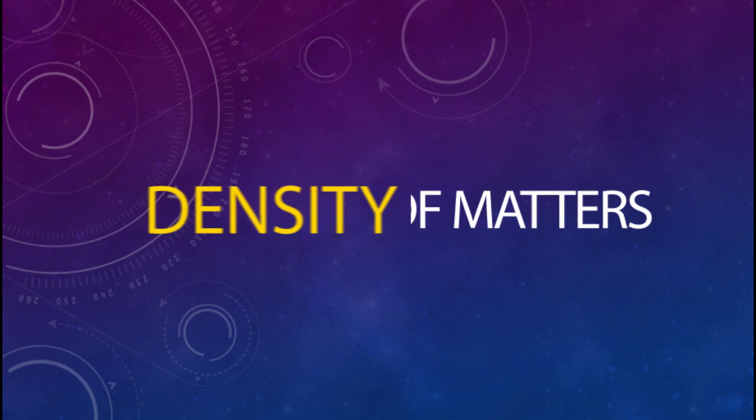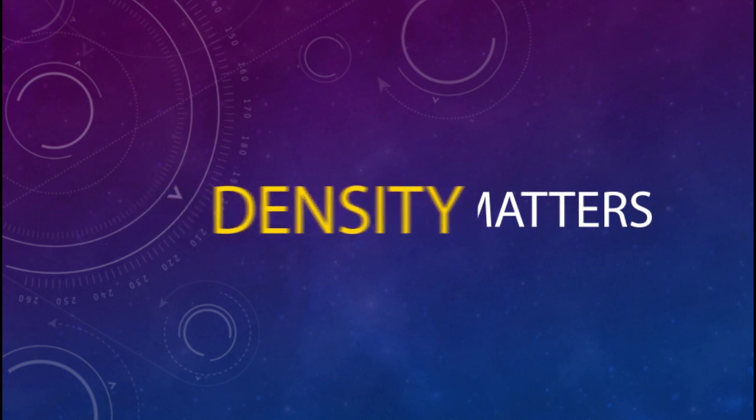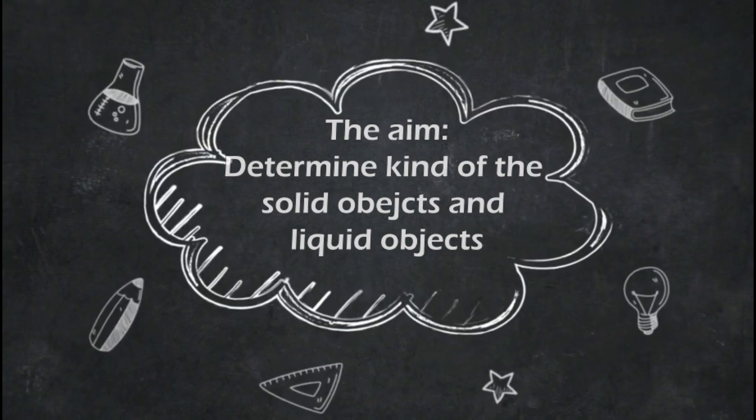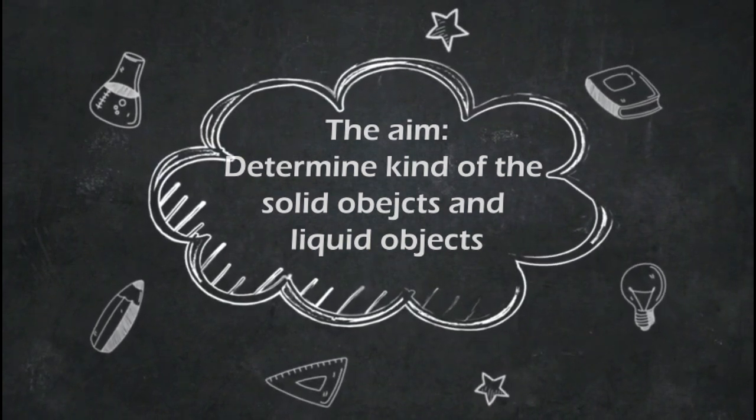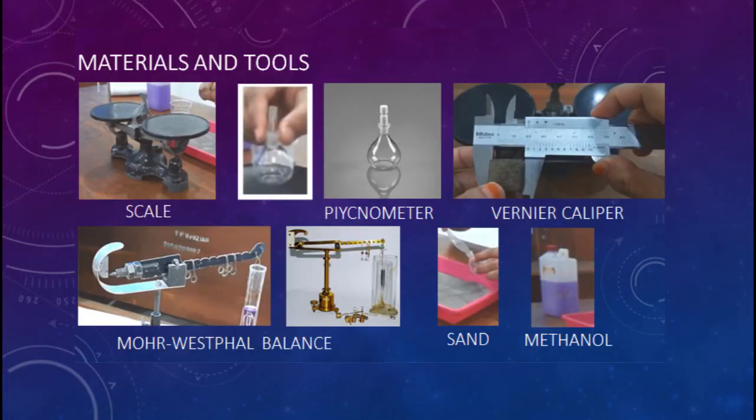Okay, this is the density of matters, the first experiment on fundamental physics. The aim of this experiment is to determine the density of solid materials or objects and liquid materials. These are the materials and tools that we are going to use for this experiment.